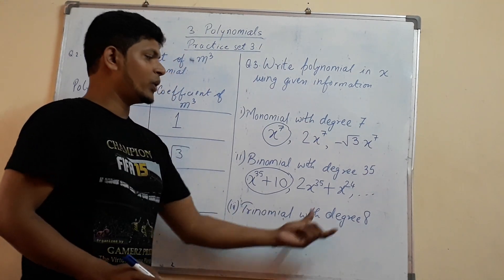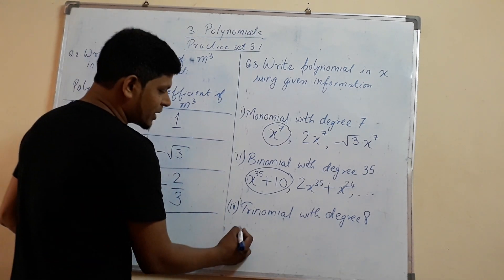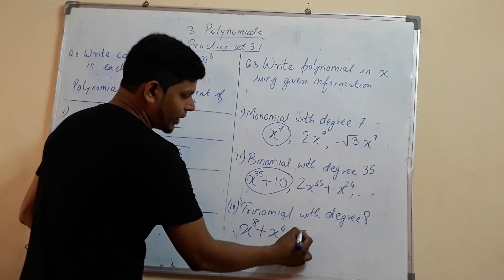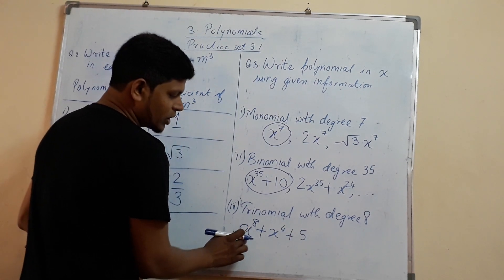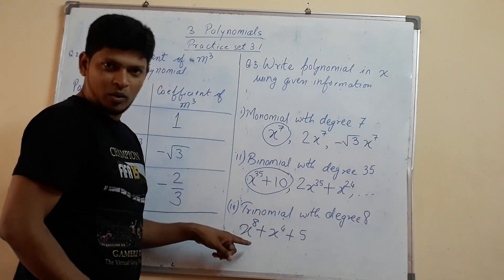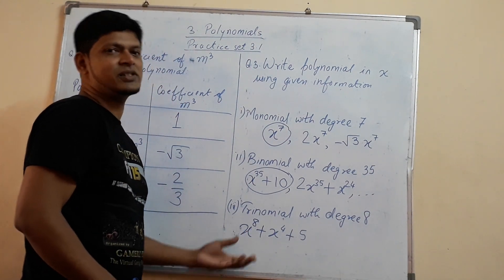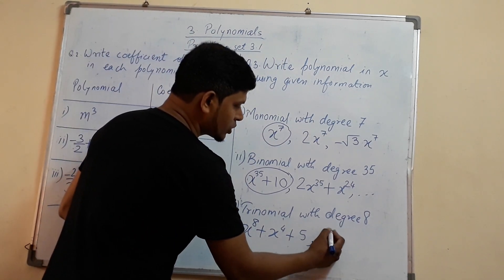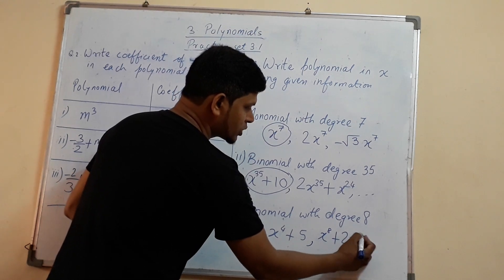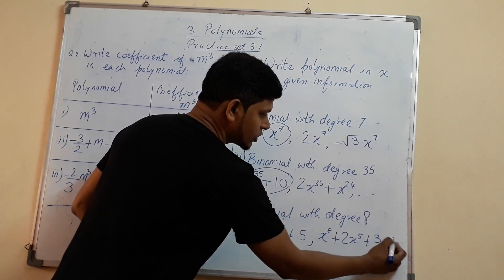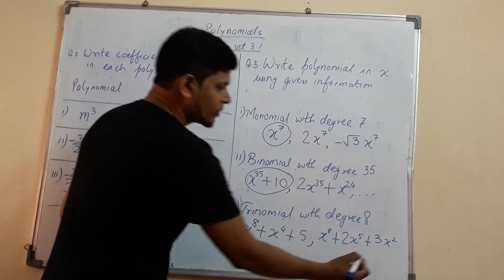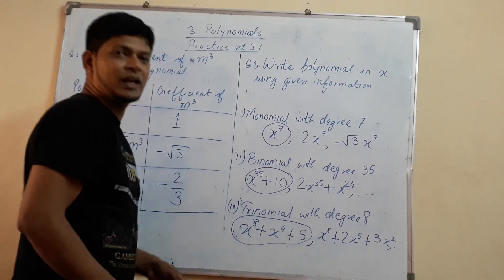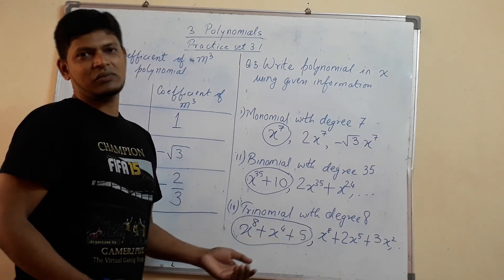Now trinomial with degree 8. We take the example x raised to 8 plus x raised to 4 plus 5. As you can see this is a trinomial with 3 terms, and the maximum power of the variable is 8, that is degree 8. Here also we can have various solutions like x raised to 8 plus 2x raised to 5 plus 3x squared and so on. We take the simple example x raised to 8 plus x raised to 4 plus 5.